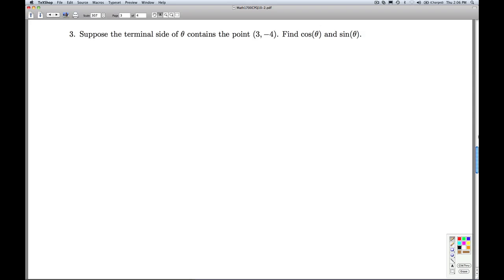Okay, number 3. We're supposed to suppose the terminal side of theta contains the point (3, -4). Find cosine theta and sine theta. So we're assuming here, when we write this, that theta is, of course, in standard position.